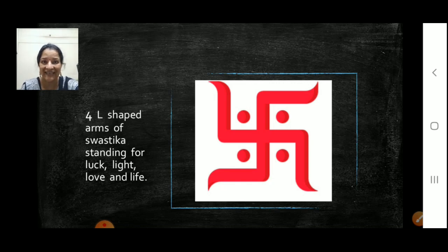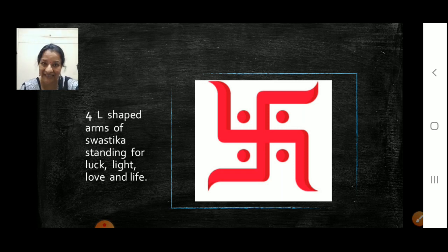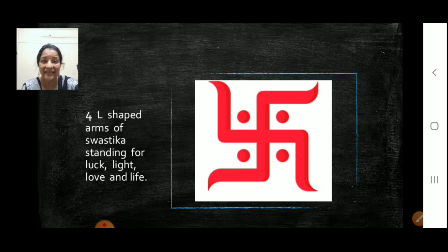This is a swastik. You must have seen your mama putting this, right? Near the main door entrance or in the temple, your mandir, what you call. Mama puts this every day, right? It is a swastik. Now can you see here children? It has four L-shaped arms. Even a swastik has four L-shaped arms.